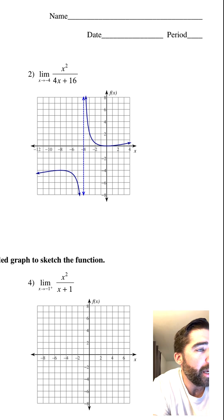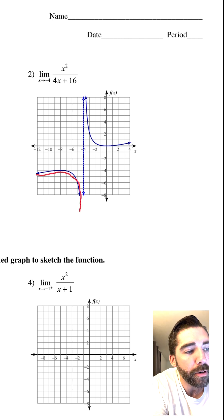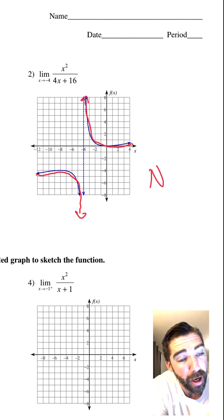The limit of this function: x² over (4x + 16) as x approaches negative 4. It doesn't say from the right or from the left, and we have an issue. From the left, we're going to negative infinity, and from the right, we're going to positive infinity. That's a problem.